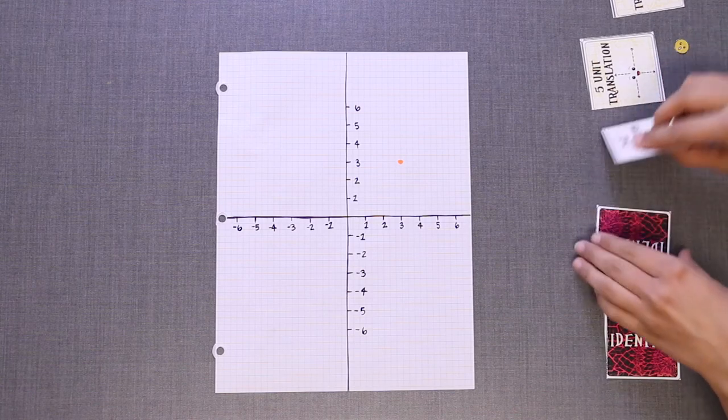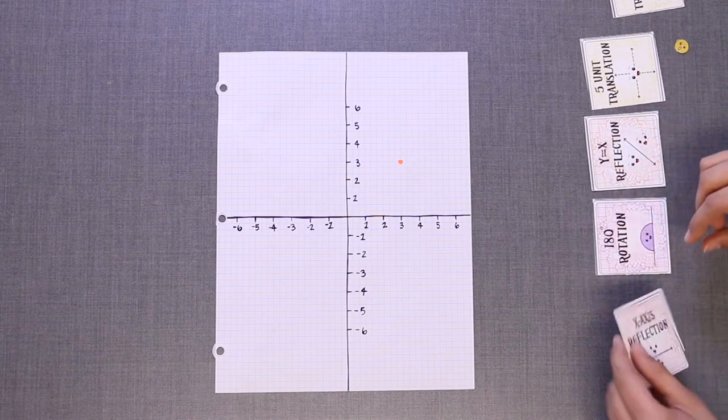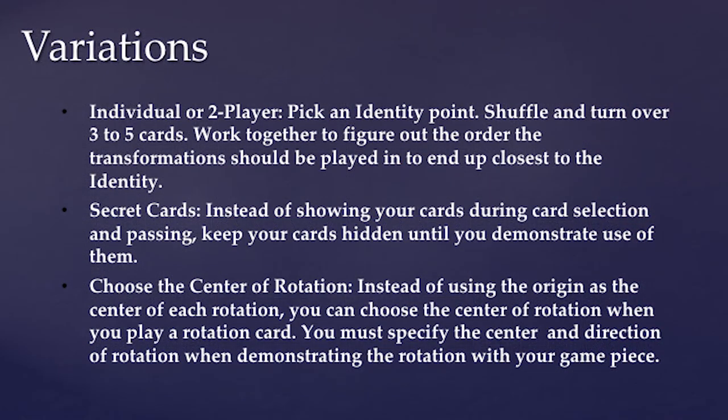A third variation is to choose the center of rotation. Instead of using the origin as the center of each rotation, you can choose the center of rotation when you play a rotation card. You must specify the center and direction of rotation when demonstrating the rotation with your game piece.